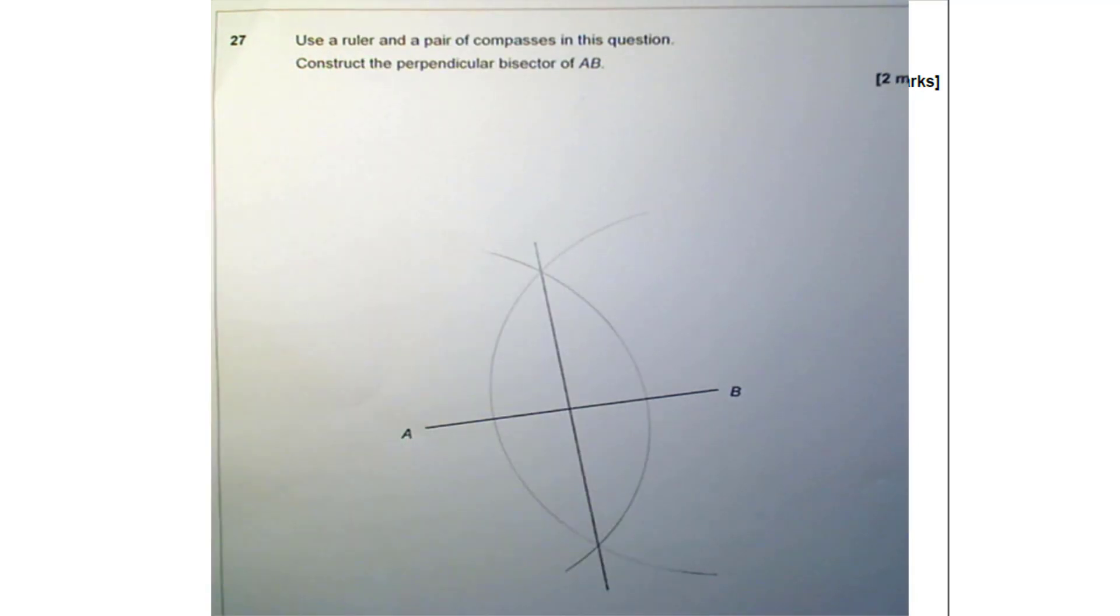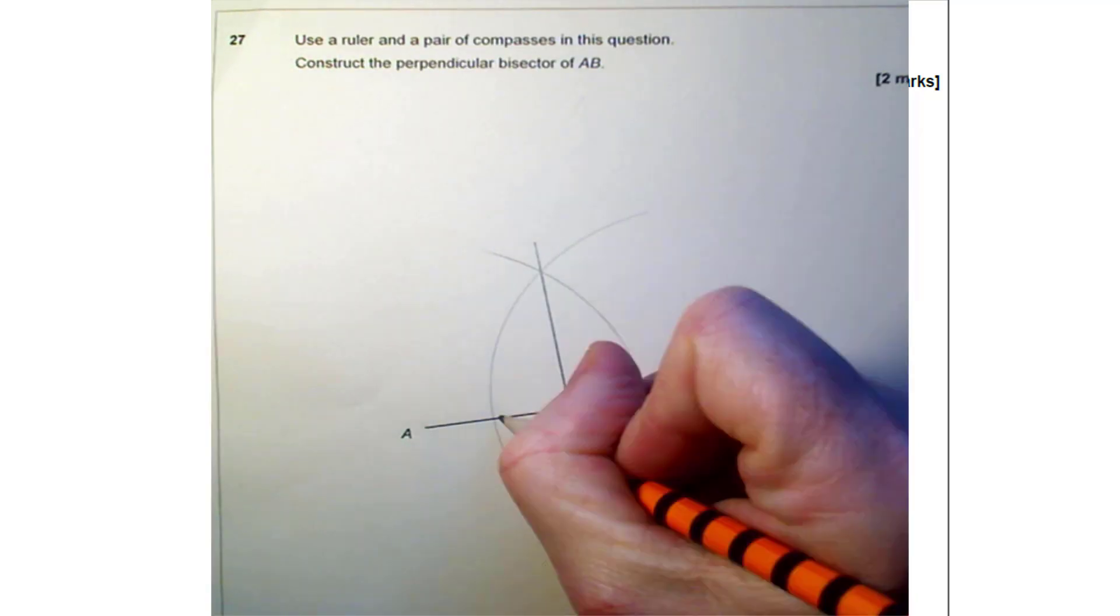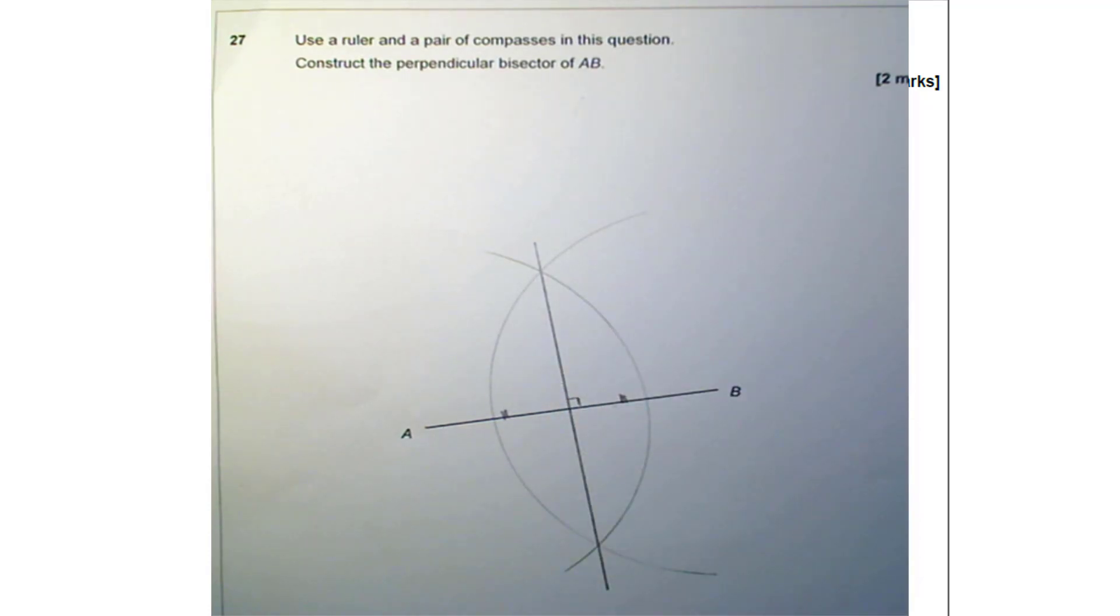Now you can always use your ruler to measure that distance, make sure it's definitely half, and you can use your protractor to double check that the angle is actually 90.